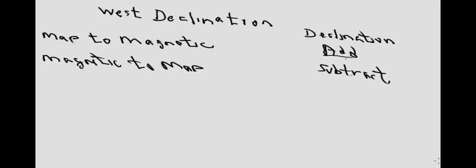Looking now at dealing specifically with west declination, all you have to remember is: if you want to go from a map bearing, sometimes called a true bearing, to a magnetic bearing, sometimes called a compass bearing, you simply add the declination. Then if you want to go from a magnetic bearing back to a map bearing, you simply subtract the declination. That's all there is to it. If you can remember that, and you're in an area of west declination, you've got the whole declination thing down.